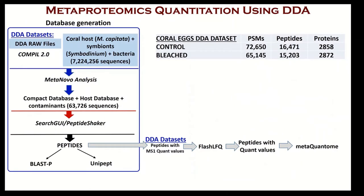As part of this analysis, we started by generating a reduced database from a large database of over 7 million protein sequences that included the coral host, its symbionts, and other bacteria that have been shown or were detected in the dataset to be associated with corals. To detect organisms within this sample, we used COMPIL 2.0 software developed at Scripps Institute along with literature survey. To reduce the database, we used Metanovo software that uses de novo tagging methods to detect possible proteins present in the sample. The compact, reduced database was later used to search the DDA dataset, leading to detection of about 15,000 to 16,000 peptides in bleached and control datasets respectively. The detected peptides were subjected to quantitative, functional, and taxonomic analysis so that the inputs can be used for MetaQuantum analysis.